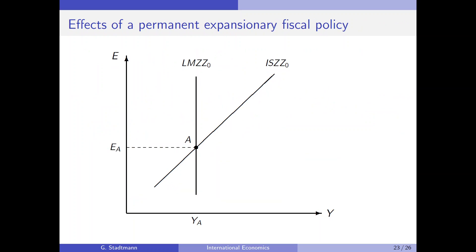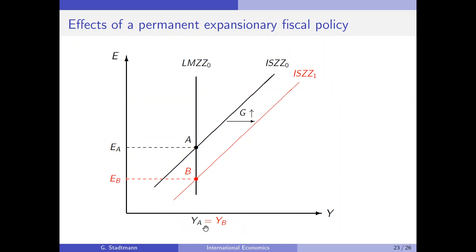Let's go back to slide 23. The ISZZ curve shifts to the right when the government increases government spending. We look for the new intersection, which is point B. As you can see, expansionary fiscal policy is not able to increase output — output stays the same as before.